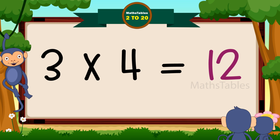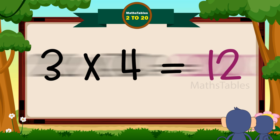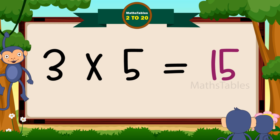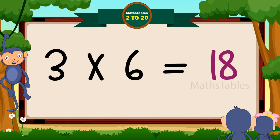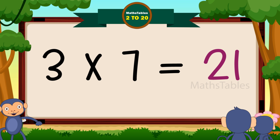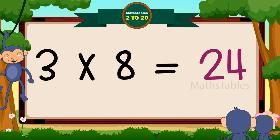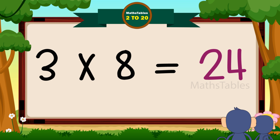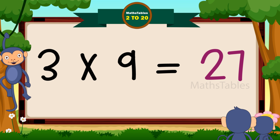Three fours are twelve. Three fours are twelve. Three fives are fifteen. Three fives are fifteen. Three sixes are eighteen. Three sixes are eighteen. Three sevens are twenty-one. Three sevens are twenty-one. Three eights are twenty-four. Three nines are twenty-seven. Three nines are twenty-seven.